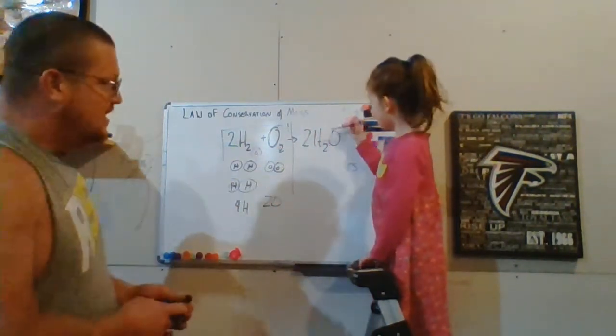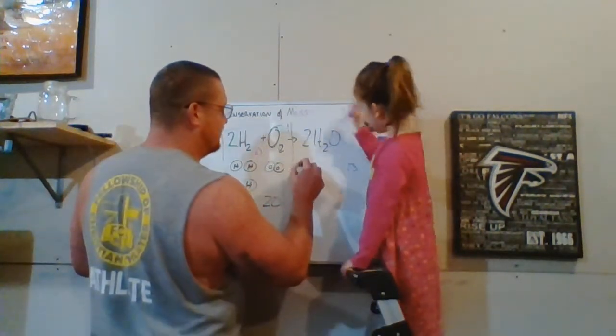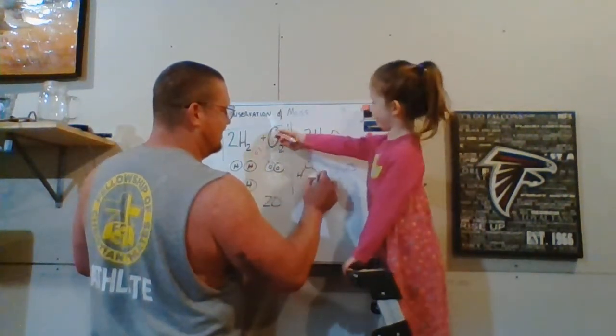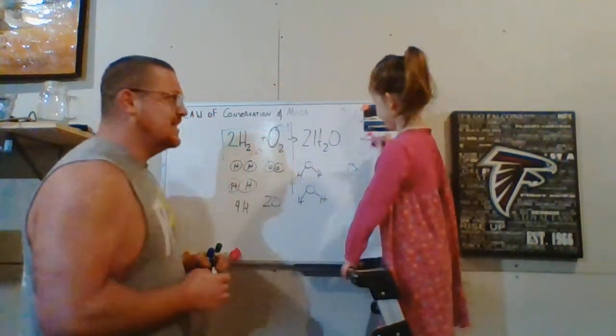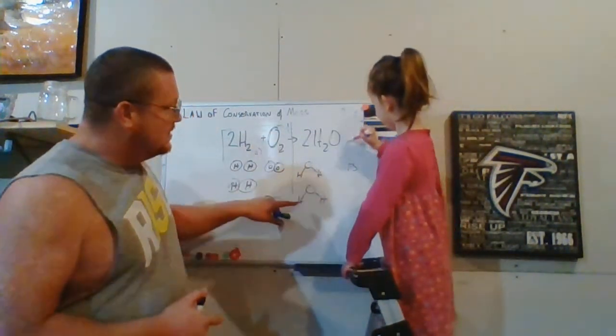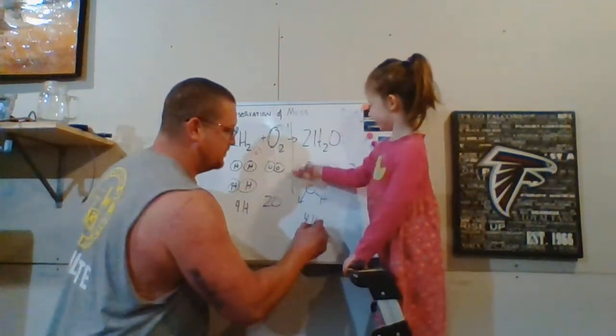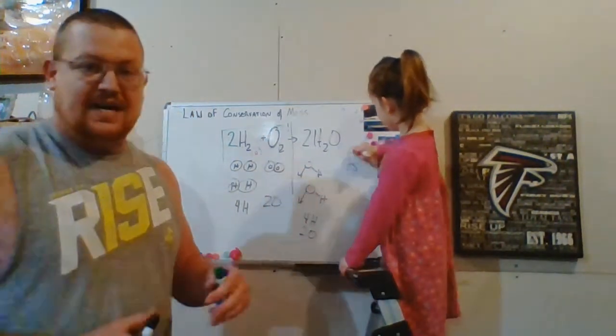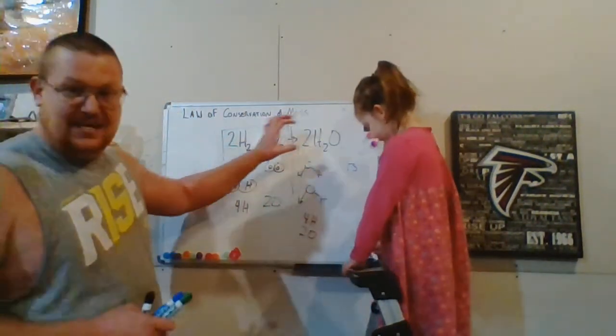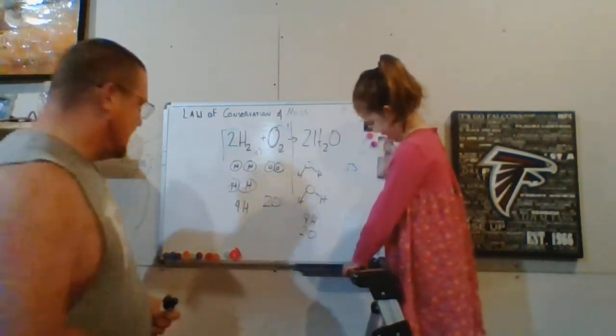Now, in here, it says we have 2 water. We have two waters so we have a total of four hydrogens, we have two oxygens. So on both sides, although it's differently, it changes phase, there's equal amounts of hydrogens and oxygens on both sides.